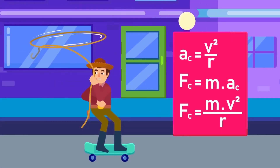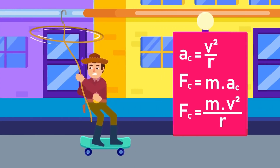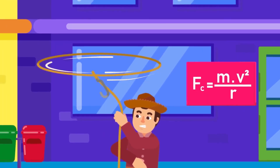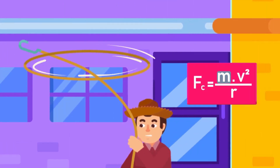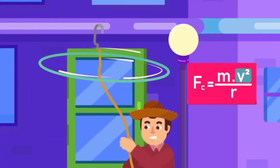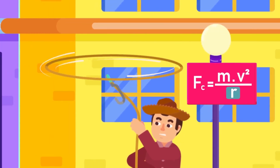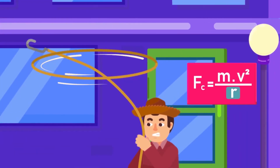This equation shows that the centripetal force acting on a body moving in a circle depends on the mass M of the body, the square of its velocity V, and is inversely proportional to the radius R of the circle.